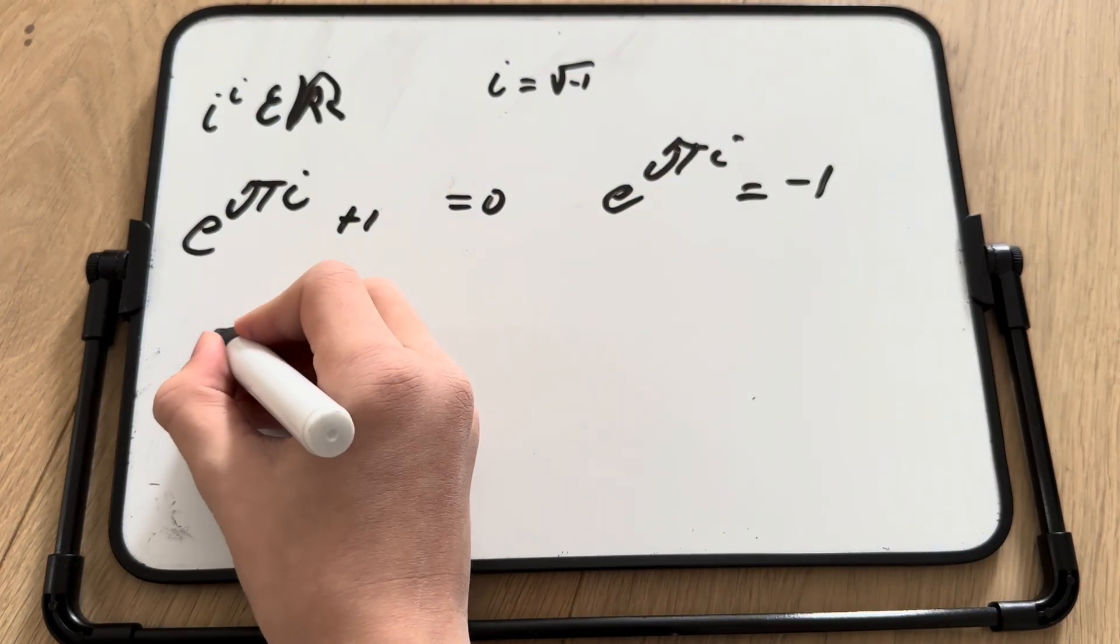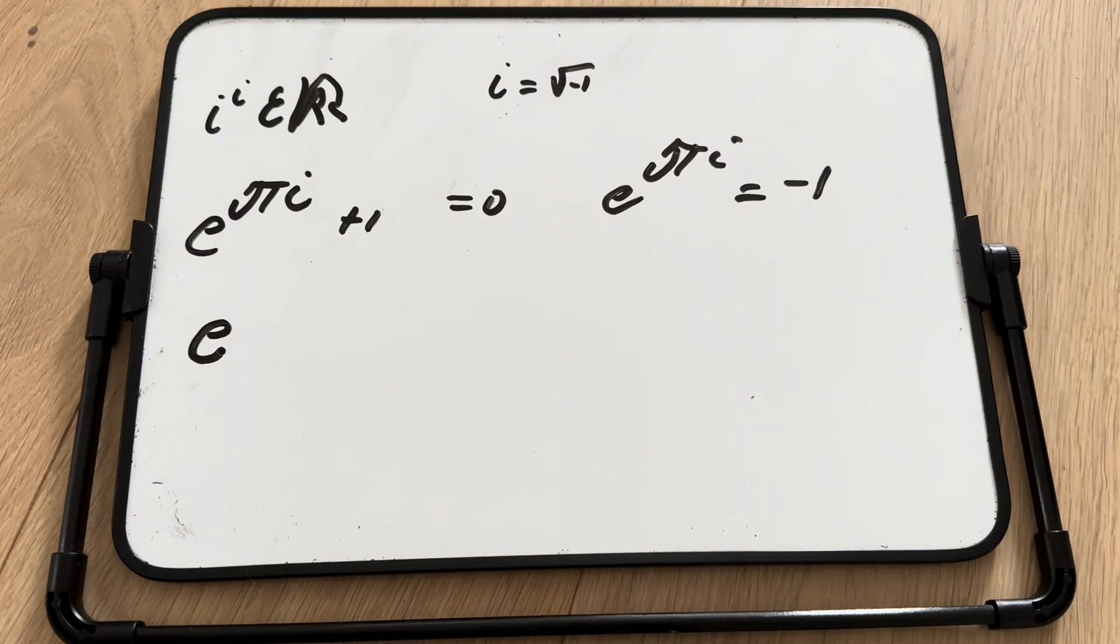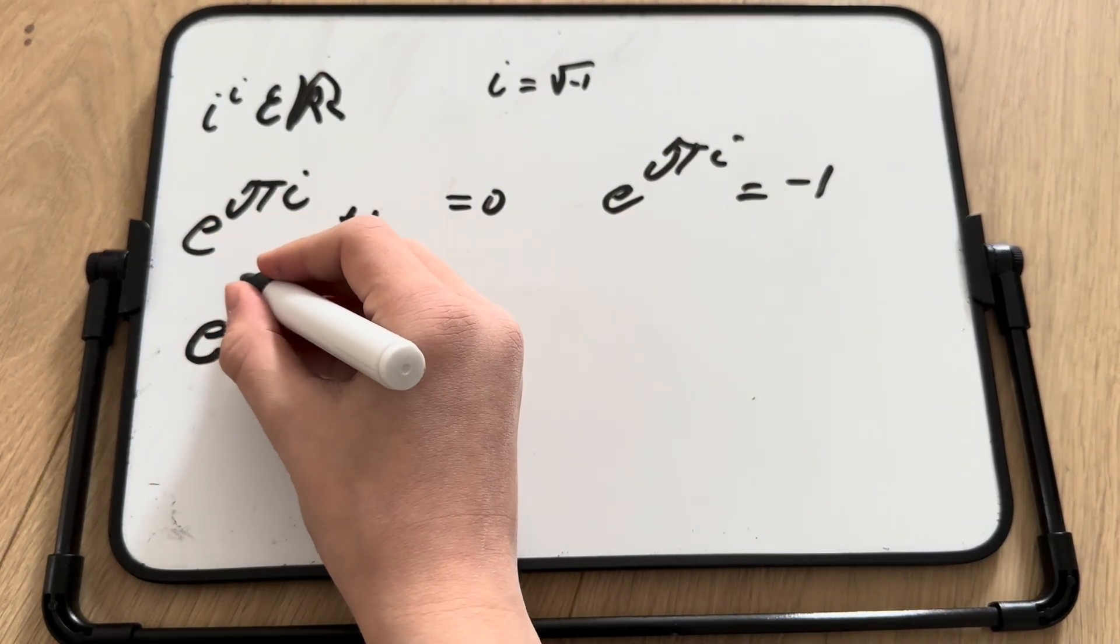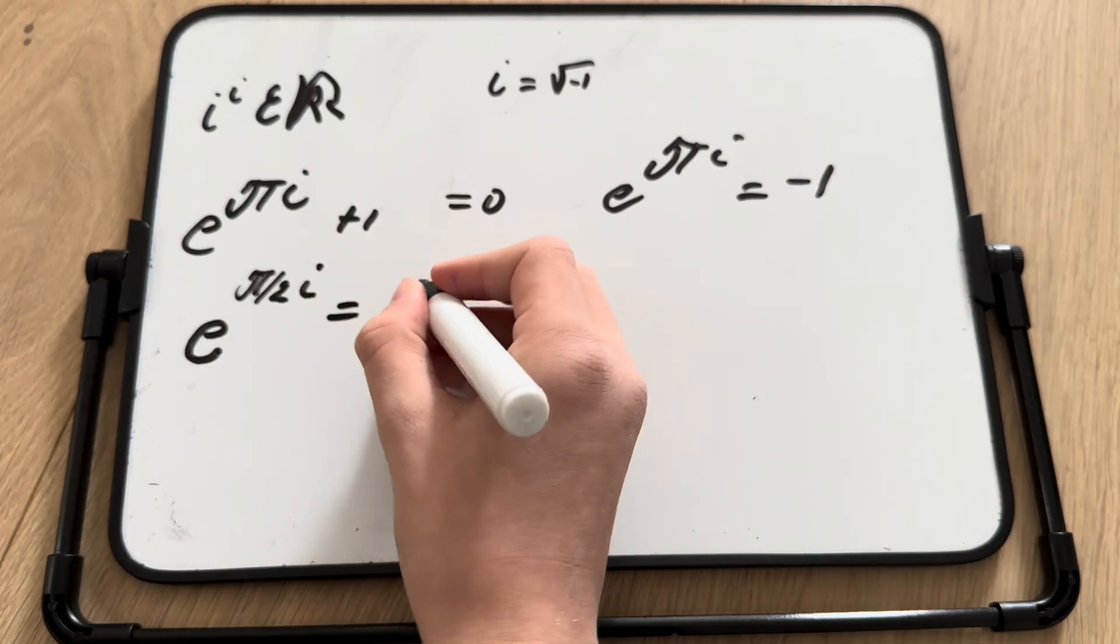So we now have e to the power of 1 half pi i, since the square root is also to the power of 1 half. So now we have e to the pi over 2i is equal to i.